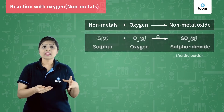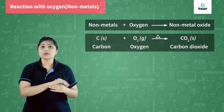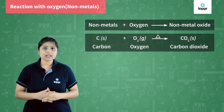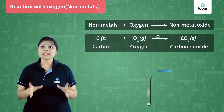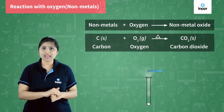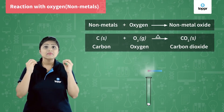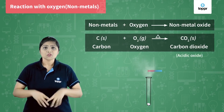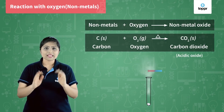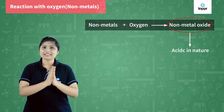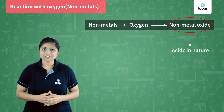Let's take carbon dioxide. If we test carbon dioxide, we find the same thing — the blue litmus changes red. That means even carbon dioxide is acidic. So generally we say non-metal oxides are acidic in nature.